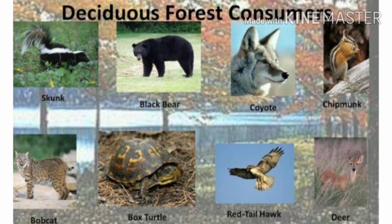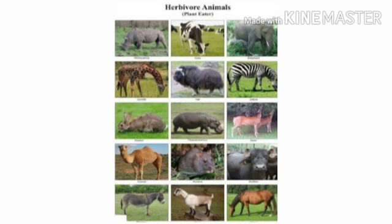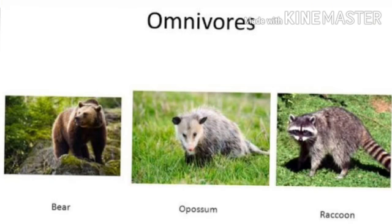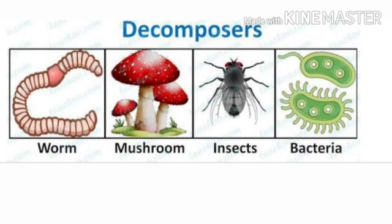Consumers include herbivores, carnivores, omnivores, and scavengers. Herbivores include deer, goat, bison, wild buffalo, elephant, and parrots. Carnivores — secondary consumers — include tiger, lion, panther, fox, and hawk. Omnivores eating both plants and animals include crow and bear. Scavengers like hyenas, jackals, and vultures eat the leftovers left by carnivores.